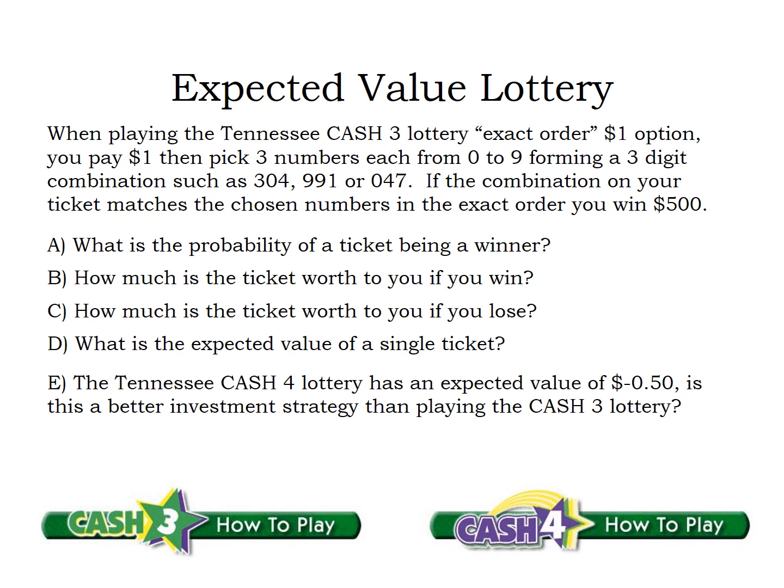So let's answer a few questions on our way to figuring out the expected value. In this particular lottery, it's a pick-three lottery. You can choose from zero to nine, which gives you 10 options for the first digit, 10 for the second, and 10 for the third digit. So that's 10 times 10 times 10 — 1,000 different combinations of numbers.